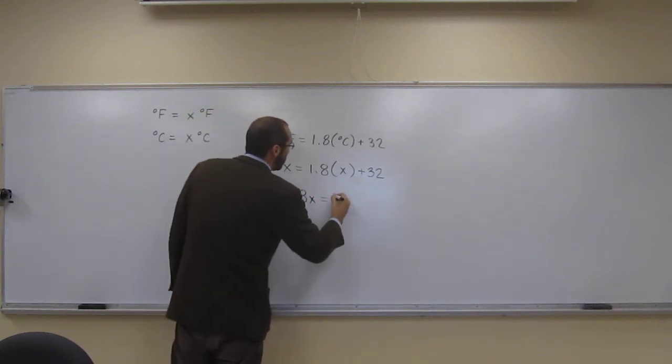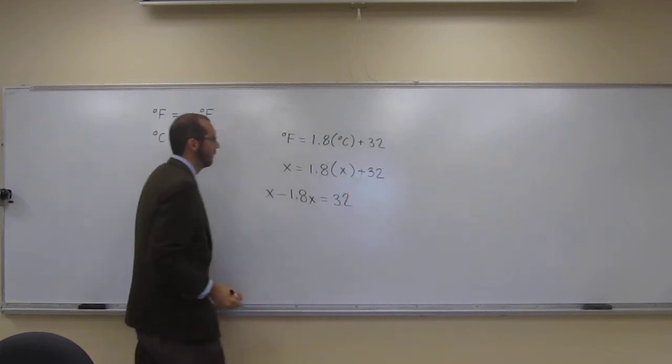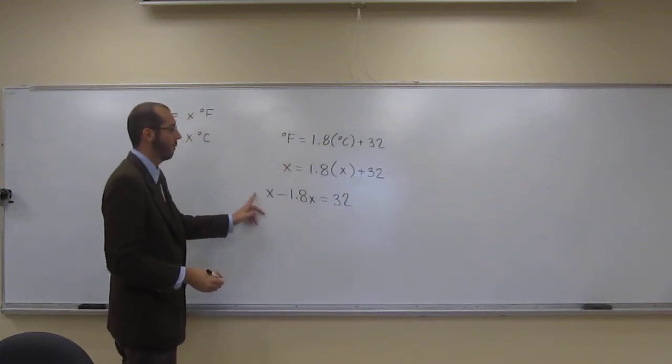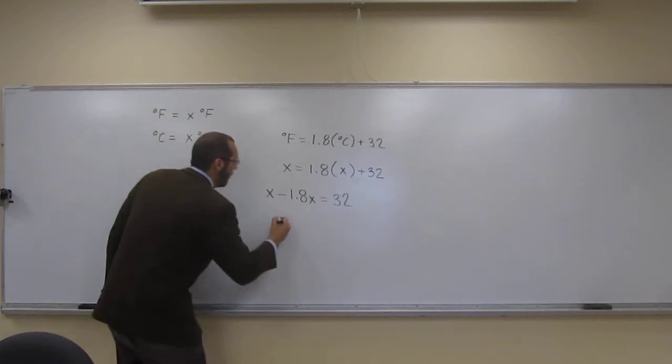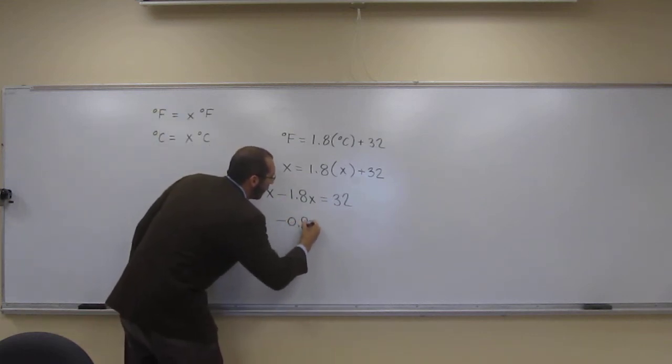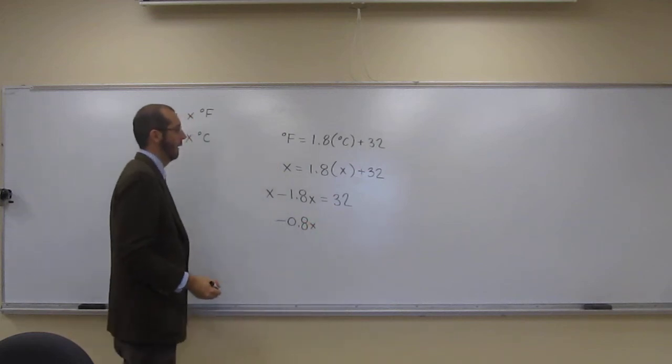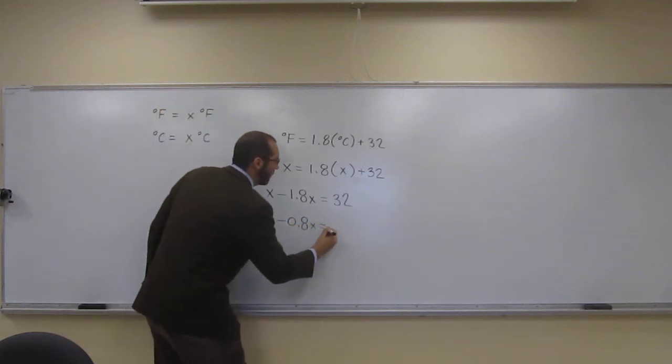So x equals 1.8x plus 32. So this is like 1x. So 1 minus 1.8 is going to be minus 0.8x like that. And that's still equals 32.